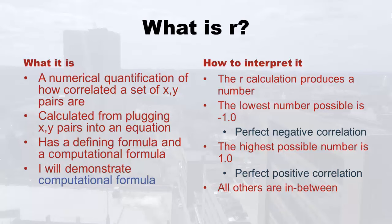How do you interpret r? The r calculation produces a number — the lowest possible is negative 1.0, which is perfect negative correlation. That never actually happens, but if you have a negative correlation and get an r that's like negative 0.95, something really close to negative 1.0, it's close to perfect negative correlation. The highest possible number is 1.0 — perfect positive correlation. So if you calculate an r of 0.95 or 0.98, you're thinking this is really close to perfect positive correlation.